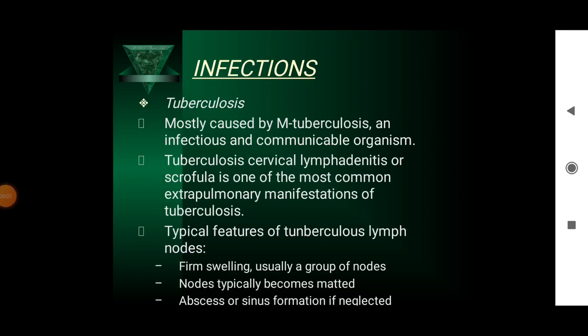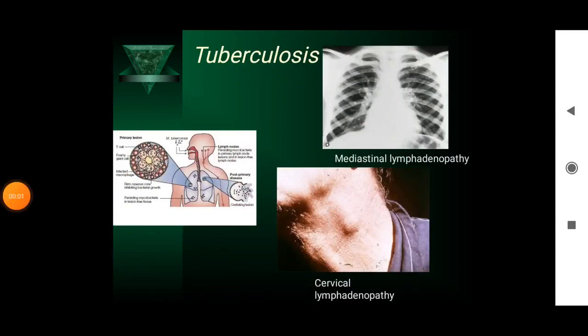Tuberculosis is mostly caused by Mycobacterium tuberculosis. It is an infectious and communicable organism. Cervical lymphadenitis or scrofula is one of the most common extra-pulmonary manifestations of tuberculosis. Typical features of tuberculosis lymph nodes are firm swelling, usually a group of nodes, and nodes typically become matted — a characteristic feature of tuberculosis — and abscess or sinus formation if neglected. This is a picture of tuberculosis cervical lymphadenopathy.